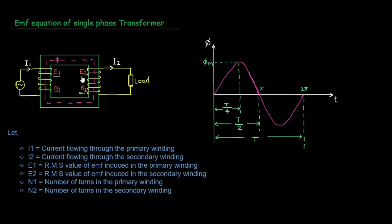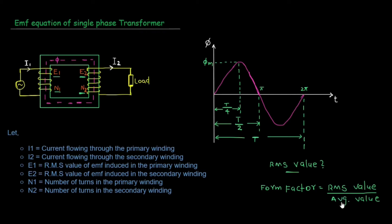What is RMS value? For the transformer EMF equation, we don't need to learn the detail about the RMS value. The form factor is the ratio of RMS value to Average value. For a sinusoidal AC supply, the form factor is a constant value — that is 1.11.